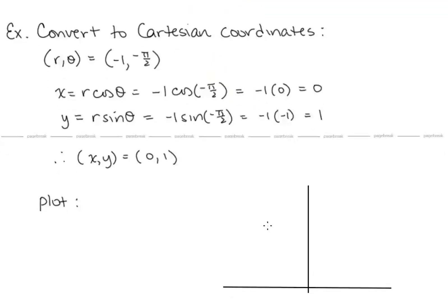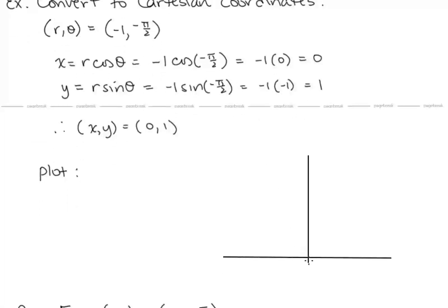Let's convert another example to Cartesian coordinates. We're given (r, θ) = (−1, −π/2). So x = −1 × cos(−π/2). Cosine of −π/2 is 0, so we have x = 0. Our y coordinate is r sin(θ), so that's −1 × sin(−π/2). Sine of −π/2 is −1, so here we have y = positive 1. So our xy coordinates are (0, 1). An angle of −π/2 goes down, but we move backward one unit, and so we end up at the point (0, 1) in xy terms.